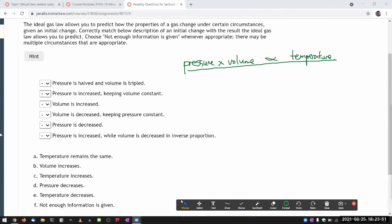It says pressure is halved and volume is tripled. Oh, so I'm looking at pressure and looking at volume. If this goes down by a factor of two, that's what halved means. This goes up by a factor of three, then combined the product changes by a factor of three halves. So increases. So temperature will increase. That would be C.